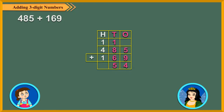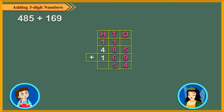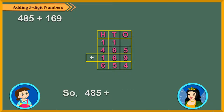Write 5 in the tens column and carry over 1 to the hundreds column. Finally, add the hundreds. 1 hundred carried over plus 4 hundreds plus 1 hundred is equal to 6 hundreds. Now let's take another question.